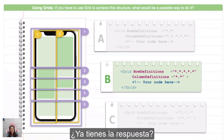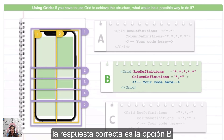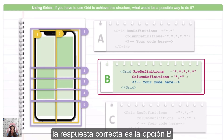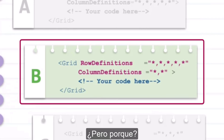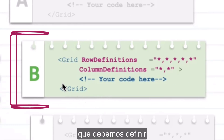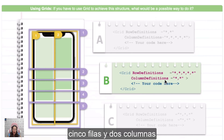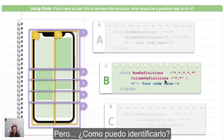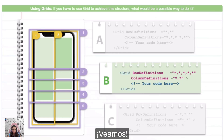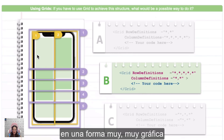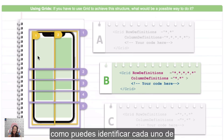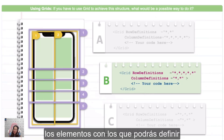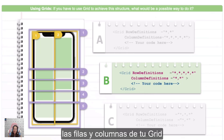Do you already have the answer? The right one is option B. But why? This option indicates that we have to define five rows and two columns. But how can I identify it? Let's see. Here I have divided it in a very graphical way — how you can identify each one of the elements to be able to define your rows and your grid columns.